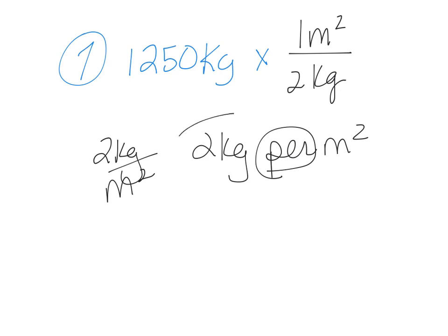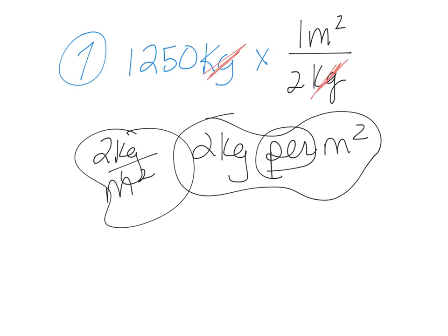So I did it up here this way because I can cancel the kilograms in the top and the bottom. And then I'm going to be left with meters squared. So I'm going to take 1,250 divided by 2 and my answer is going to be 625 meters squared.